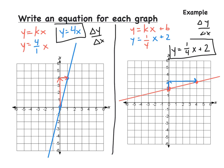So remember our steps. First, check to see where it crosses. If it crosses at 0, 0, we're going to use y equals kx. If it crosses somewhere else on the y-axis, we're going to use y equals kx plus b — where b is where it crosses on the y-intercept, and k equals the change of y over the change of x.